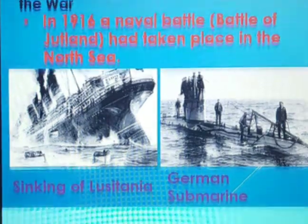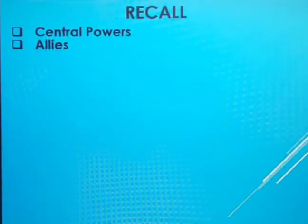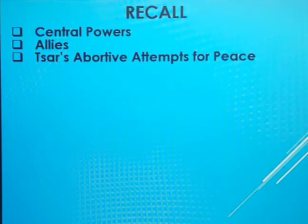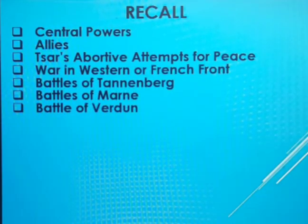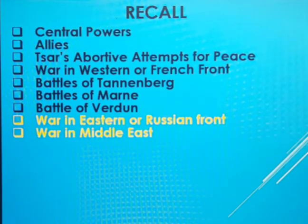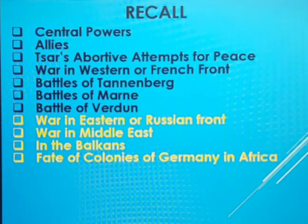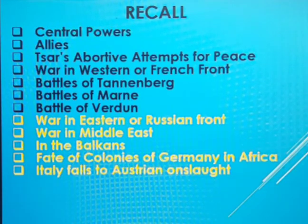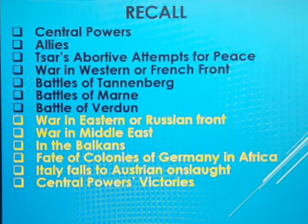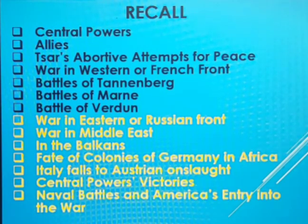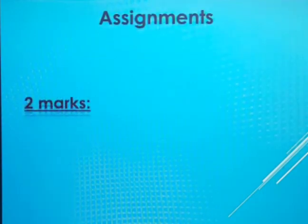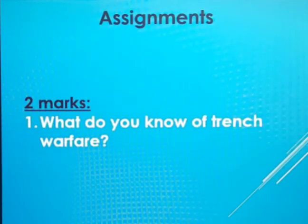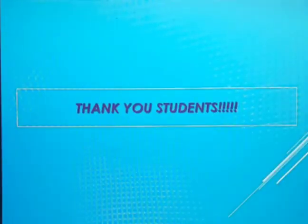Today's class what we learned: the course of the war, two warring camps — central powers and allied powers; war on the western front or French front; Battle of Tannenberg and Marne; Battle of Verdun; war on the eastern or Russian front; war in the Middle East; war in the Balkans; fate of German colonies in Africa; Italy falls to Austrian onslaught; central power victories; naval battle and America's entry into the war and the reason USA entered the First World War; and the last topic is the Treaty of Versailles. Please note the assignment: two marks — what do you know of trench warfare? Thank you, students.